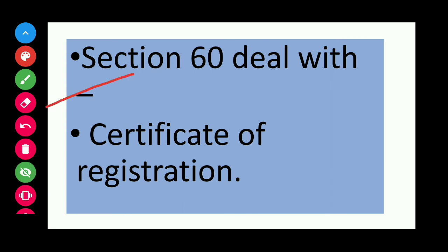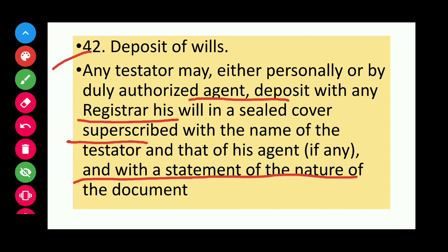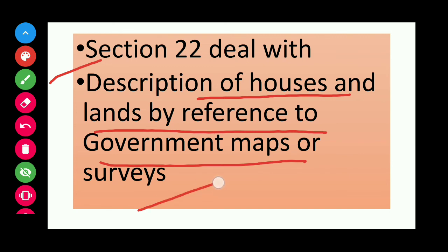Section 60 deals with the certificate of registration. Section 42 covers deposit of wills — any testator may either personally or through a duly authorized agent deposit with any registrar his will in a sealed cover superscribed with the name of the testator, his agent, and a statement of the nature of the document. Section 22 deals with description of houses and lands by reference to government maps or surveys.